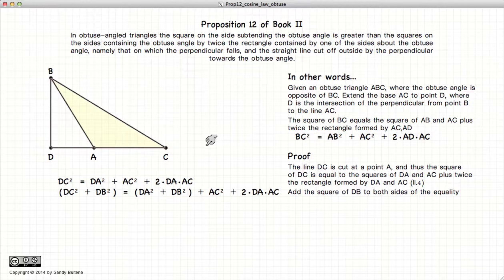Now if we add DB squared to both sides of the equation. So we've added it here. And we've added it to here. So this equation still holds. But what is DC squared plus DB squared?